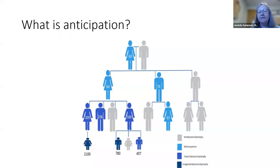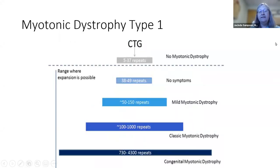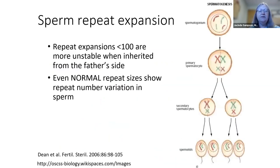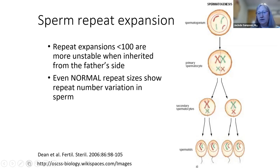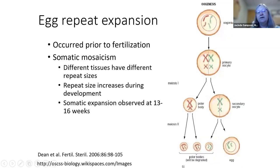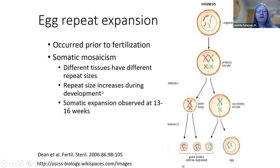Repeat expansions tend to get larger faster from the maternal line, but can get larger from either parent. In sperm, the expansions are unstable from the paternal side but cannot expand as large as through maternal inheritance. Once egg and sperm meet and the embryo begins developing, different tissues can have different repeat sizes. This variation continues through development from egg to embryo to infant.